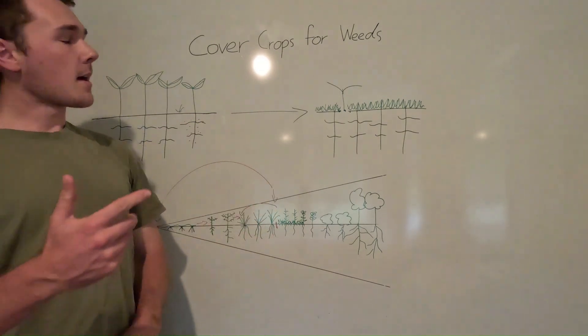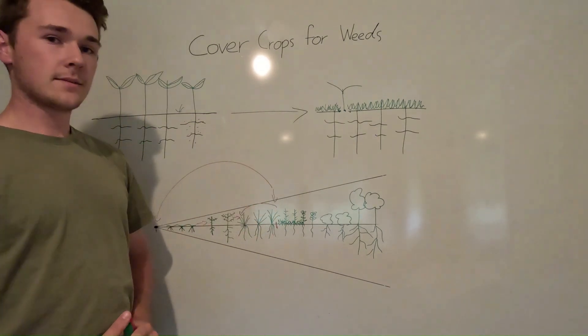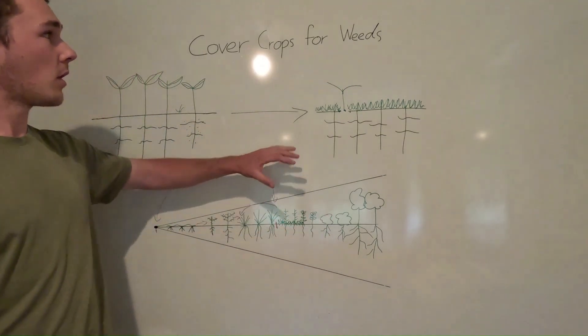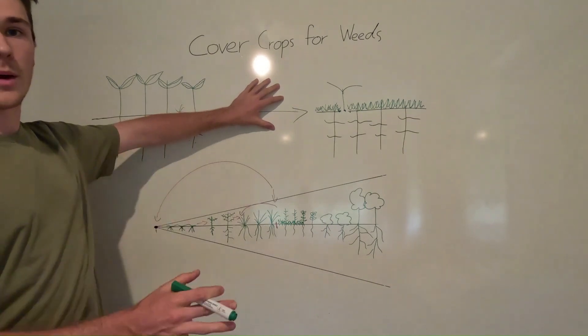So we have it. There are the three ways that cover crops can suppress weeds. If you're looking for a way to suppress weeds while also feeding your soil in the next crop, cover crops are the number one way to do that.